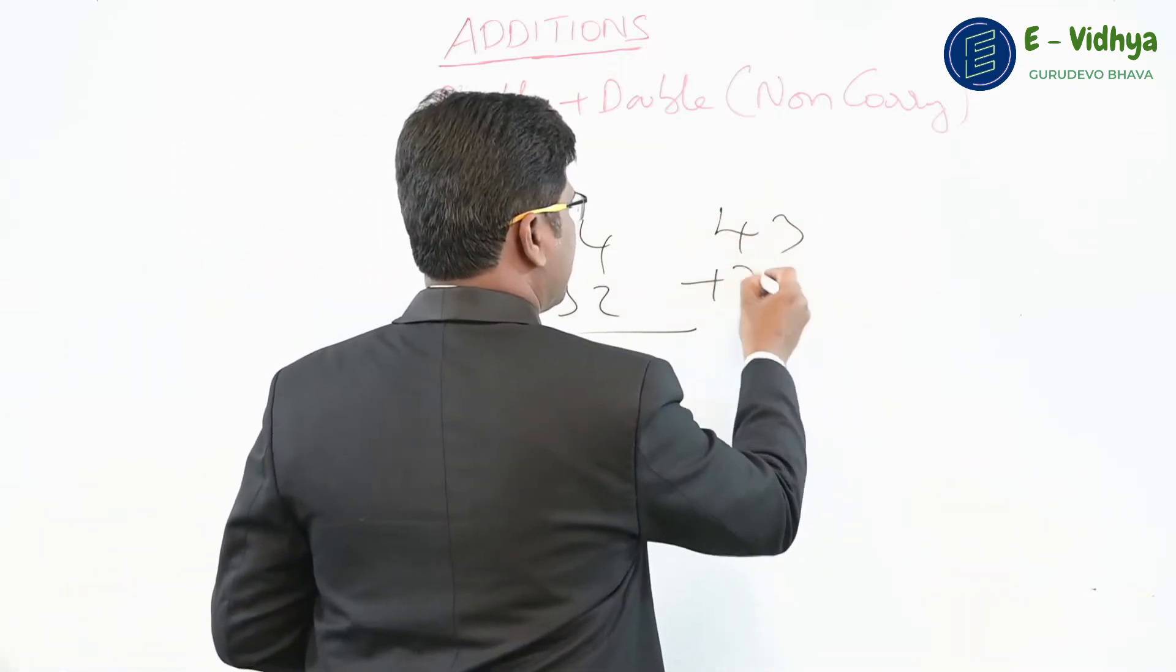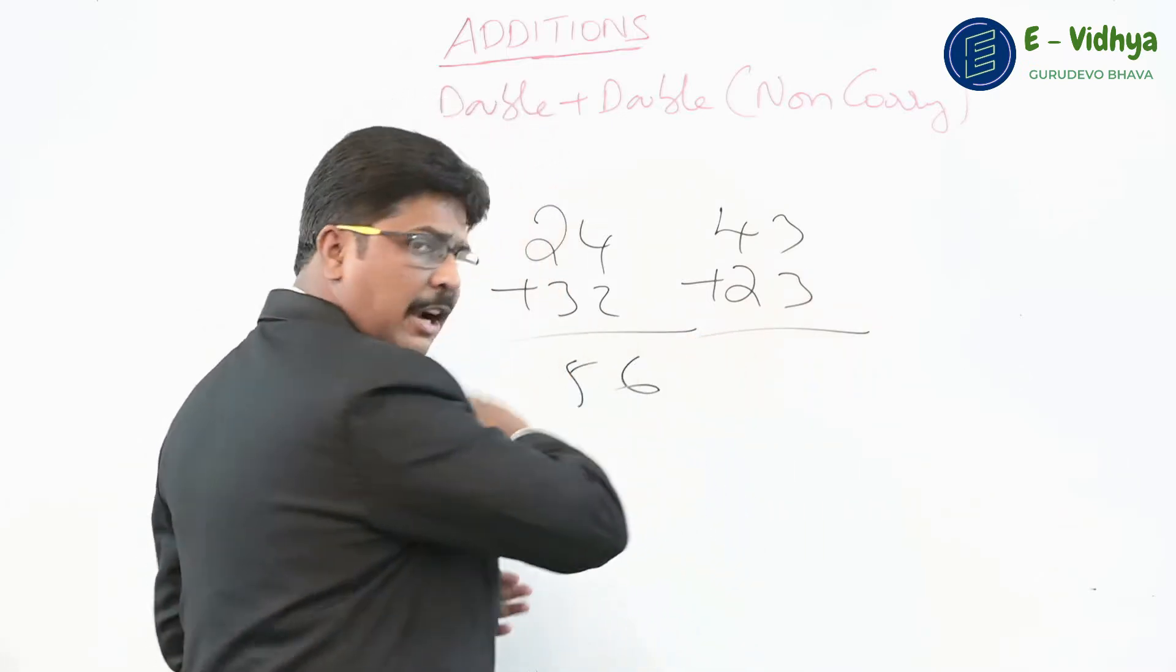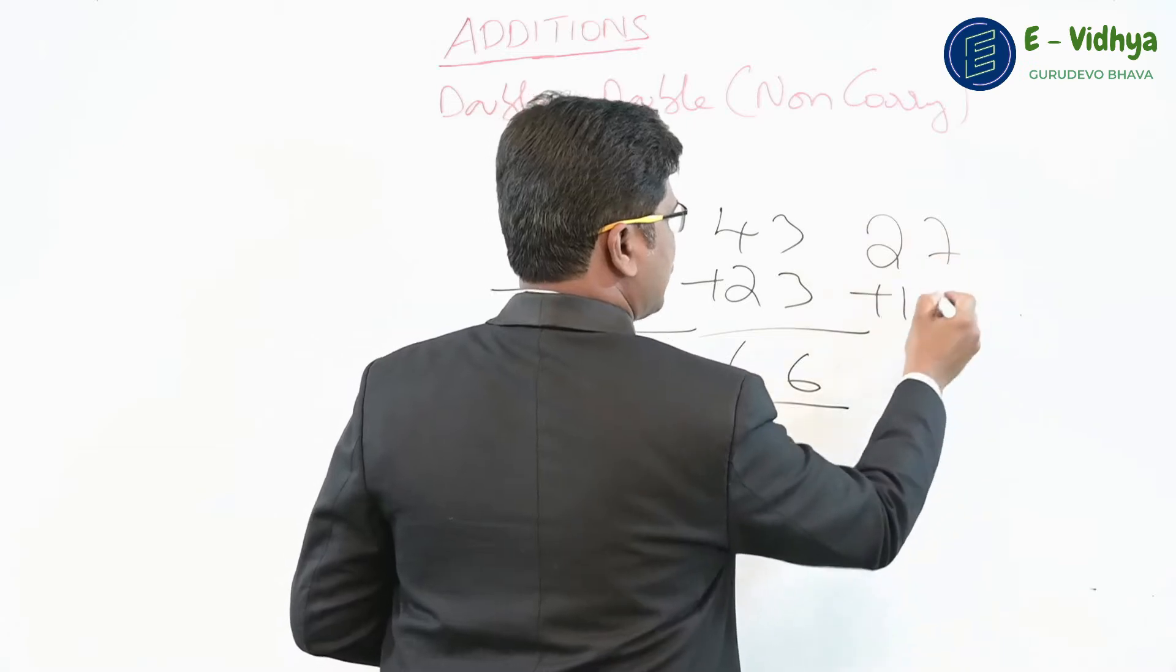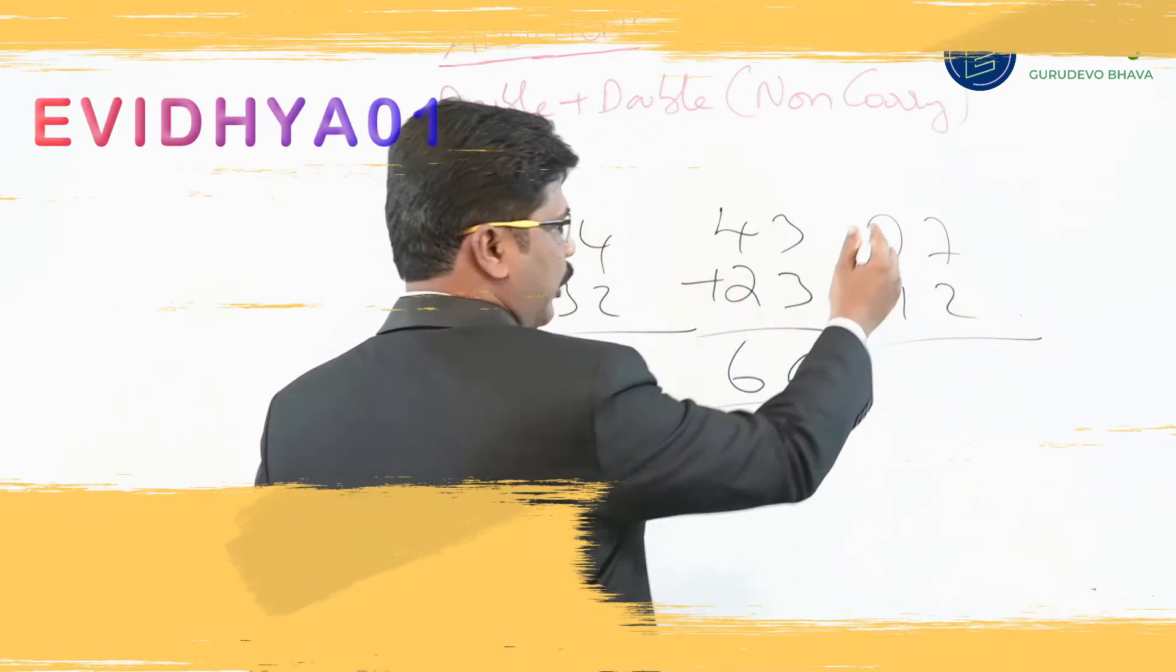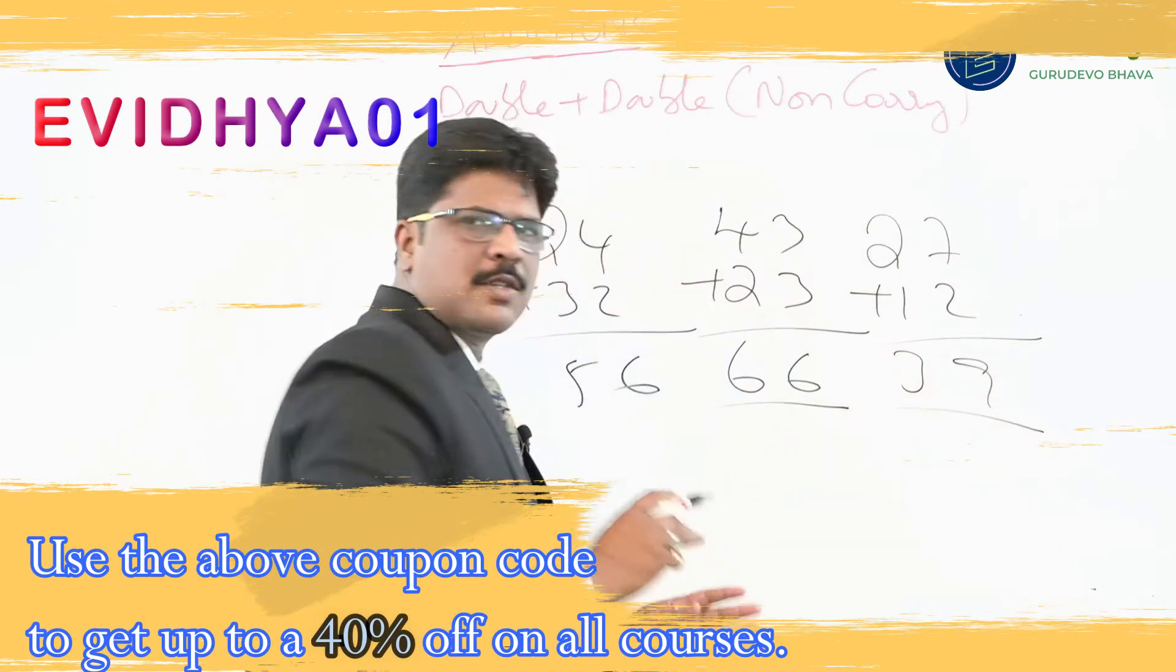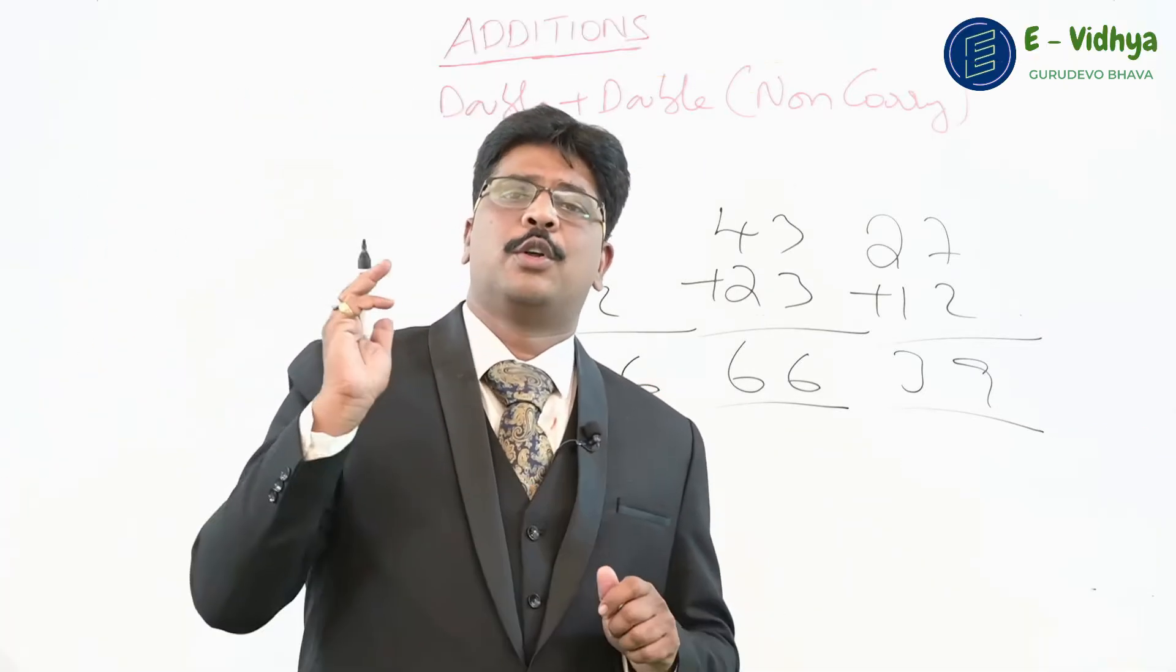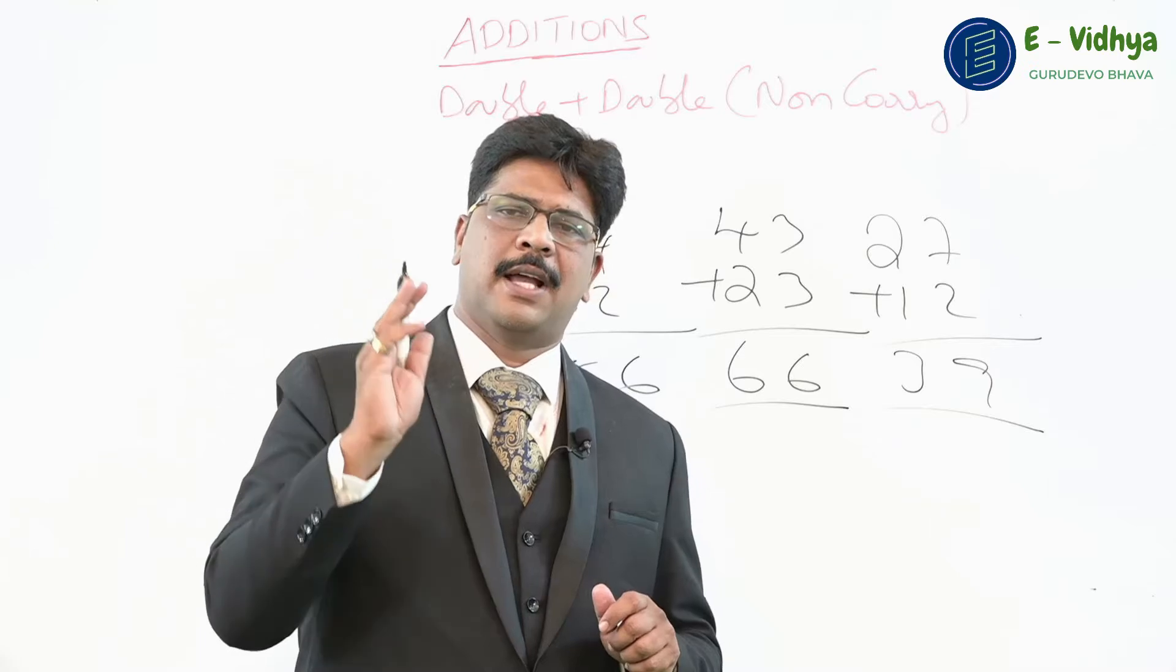Like 43 plus 23, how much? Add from left to right, it is 66. Like 27 plus 12, how much? Add from left to right: 2 plus 1 is 3, 7 plus 2 is 9. So whenever you get non-carry type questions, they are so natural. Non-carry numbers are natural additions.